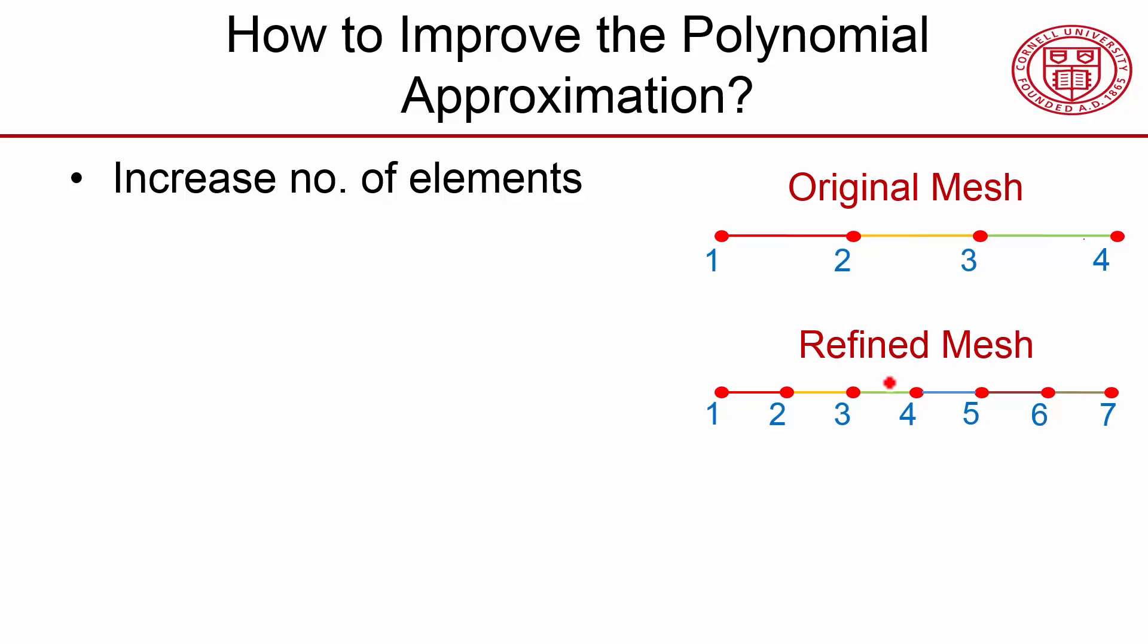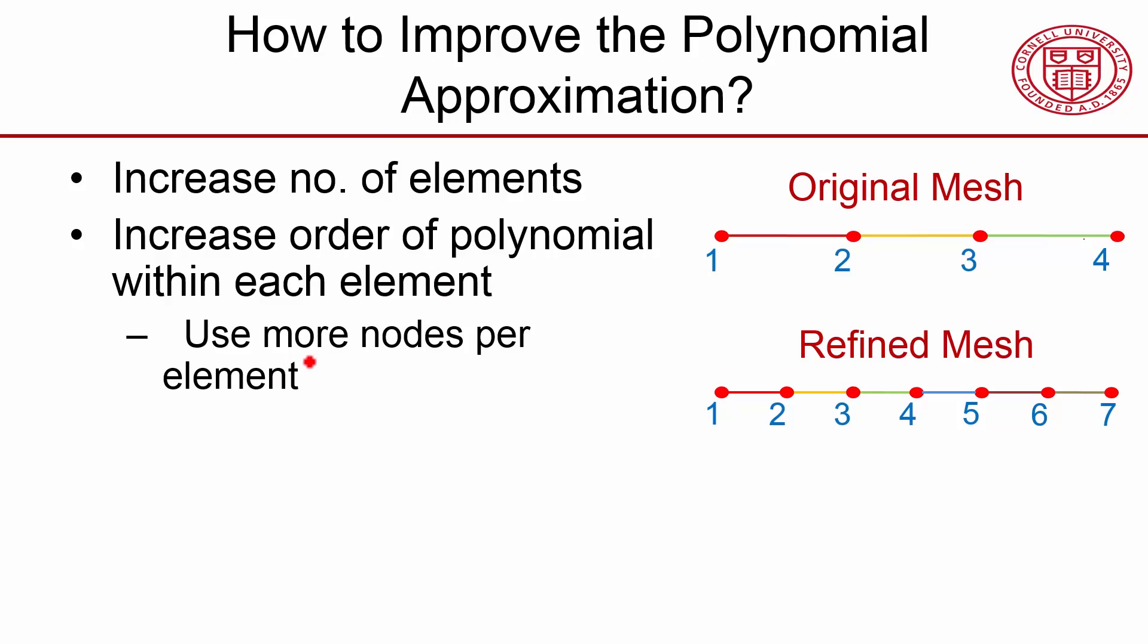The other way to improve the polynomial approximation is perhaps less apparent, which is to increase the order of the polynomial within each element. And you do that by using more nodes per element.